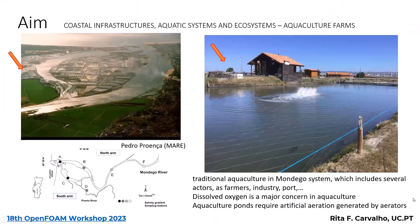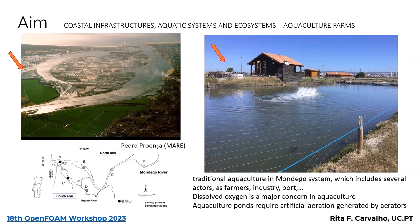The idea is to model an aquaculture tank with an aerator. Normally, traditional aquaculture uses a Taiwan paddle aerator. Here is the mouth of the Mondego river near Figueira da Foz, where some aquaculture facilities are located. In aquaculture tanks, oxygenation is very important — dissolved oxygen for fish survival is the second highest cost after fish feed.